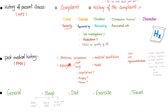Past medical history covers previous occurrence, medical conditions — ask about high blood pressure, high blood sugar, high cholesterol — allergies, current medications, hospitalizations, surgery, and trauma. For general history, ask about four things: sleep, diet, exercise, and recent travel. For sleep, ask: do you have trouble falling asleep, staying asleep, or waking up early? If the patient confirms high blood pressure, don't just move on — ask when they were diagnosed, what medications they take, whether they take them regularly, and how high their blood pressure runs.